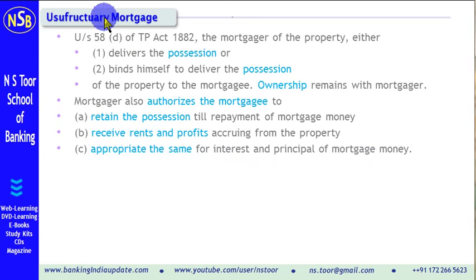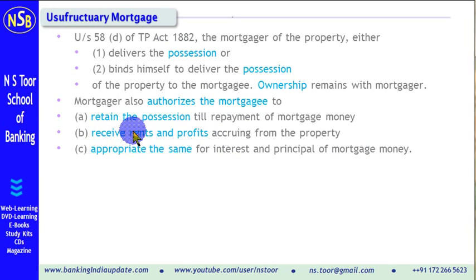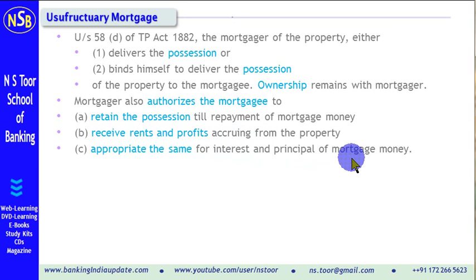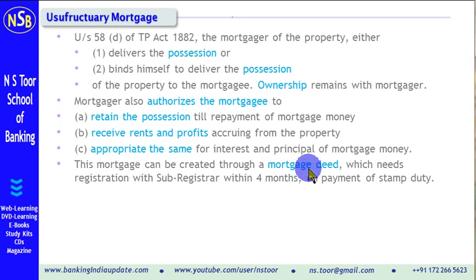So, in case of Usufructuary Mortgage, possession is given to the Mortgagee — the bank. The Mortgagee retains the possession till repayment of the loan. The Mortgagee receives the rents and profits accruing from the property and makes use of that rent and profit for adjustment of the Mortgage money. This Mortgage can be created through a Mortgage deed. To create this Mortgage, a Mortgage deed is created, which requires registration with the sub-registrar, and the time limit here is 4 months.